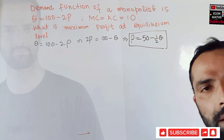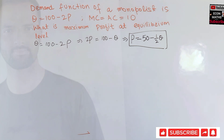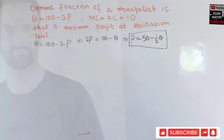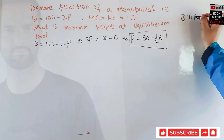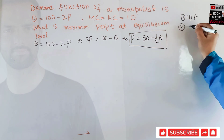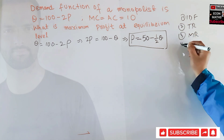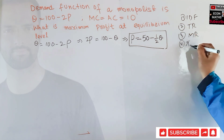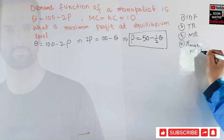This is the first step in finding the equilibrium level of output and price, after which we can calculate the maximum profit. The steps are: Step 1 — find the inverse demand function. Step 2 — find total revenue. Step 3 — find marginal revenue. Step 4 — apply the profit maximizing condition, that is marginal revenue should be equal to marginal cost.